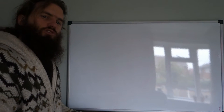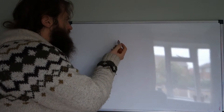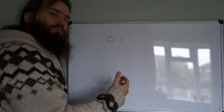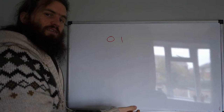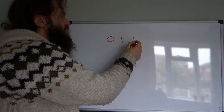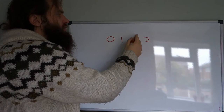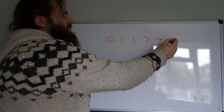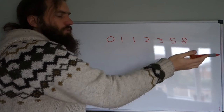If you didn't watch that episode, just briefly: the Fibonacci numbers start with 0 and 1, and then the next number is always the sum of the previous two numbers. So 1 again, then 2, then the sum of 2 and 1 is 3, then 5, 8, and so on.